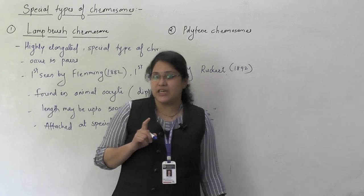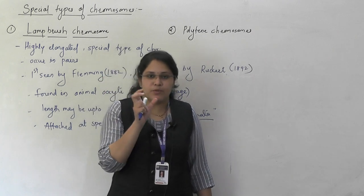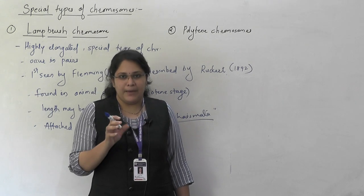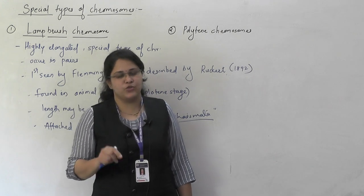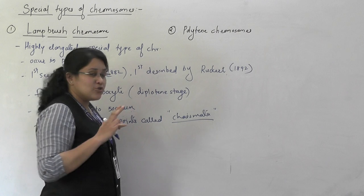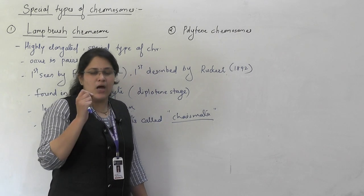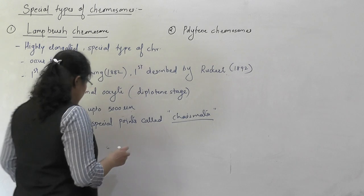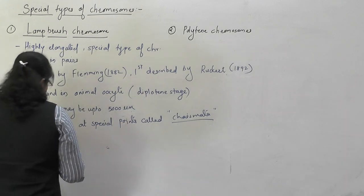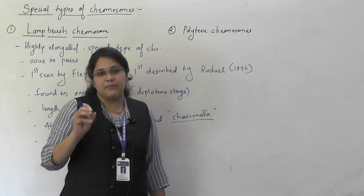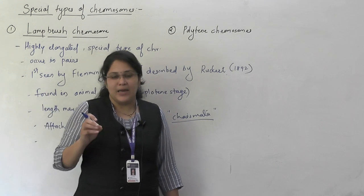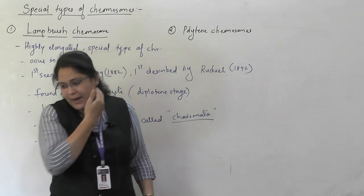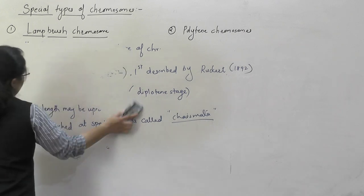Homologous chromosomes may remain attached at certain points, and these points are known as chiasmata. Now let us see its structure. It consists of a main axis, and that main axis has so many lateral extended loops. These loops give the appearance of a brush. Because of the presence of these extensions, these chromosomes look like a lamp brush — that is why they are called lampbrush chromosomes.